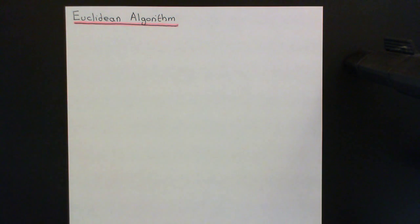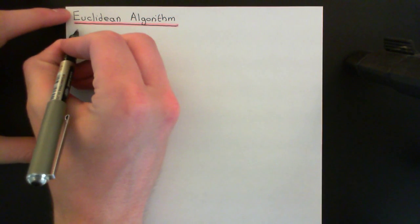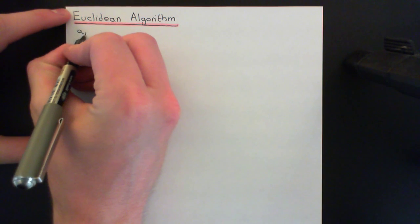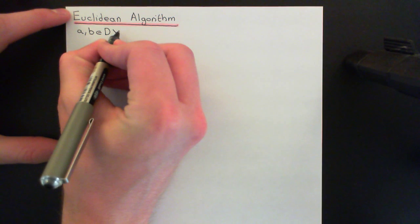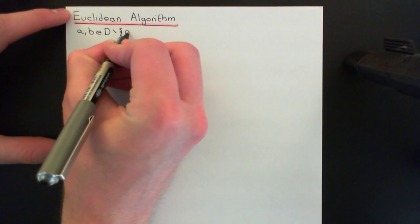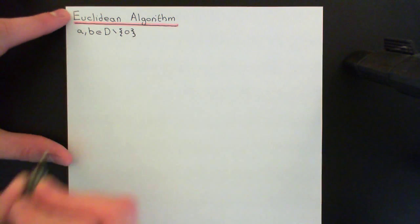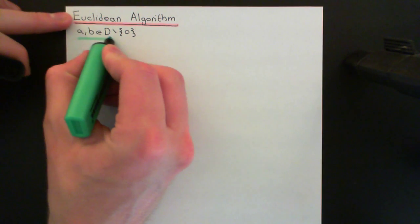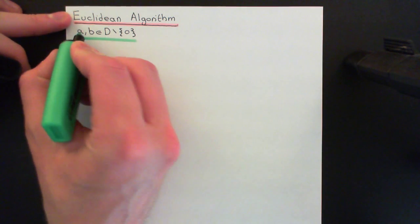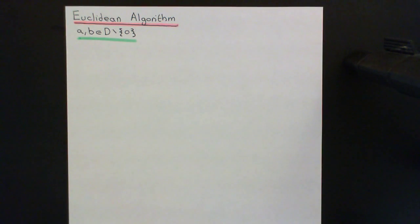So what is the Euclidean algorithm? To perform it, you need two elements from your Euclidean domain — specifically two non-zero elements. It's trivial if you use the zero element, so we take two non-zero elements A and B from the Euclidean domain.